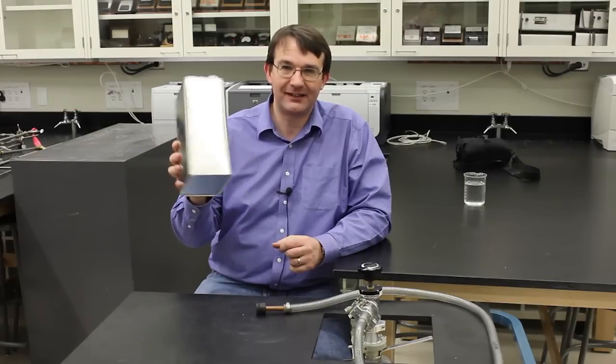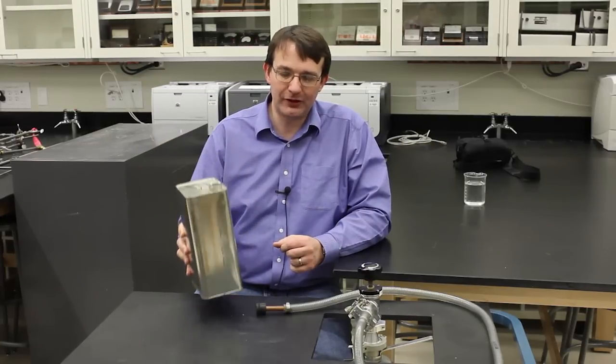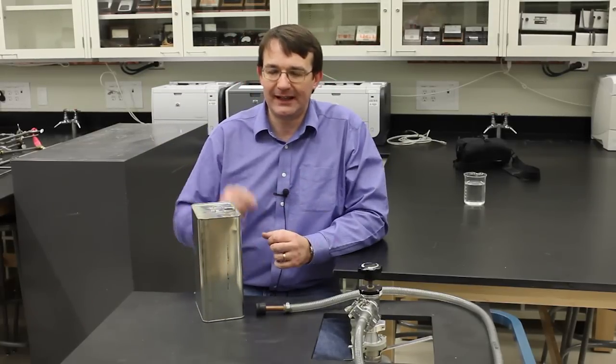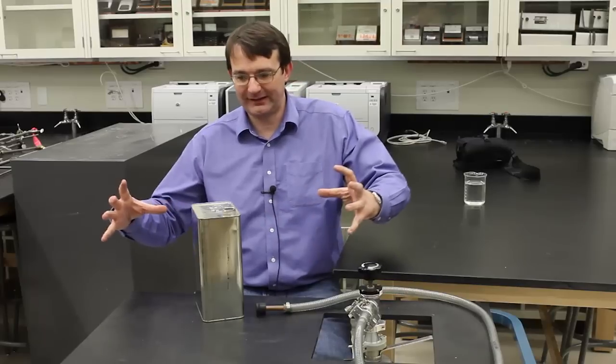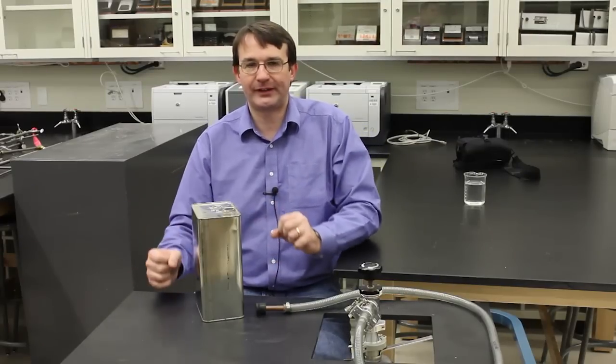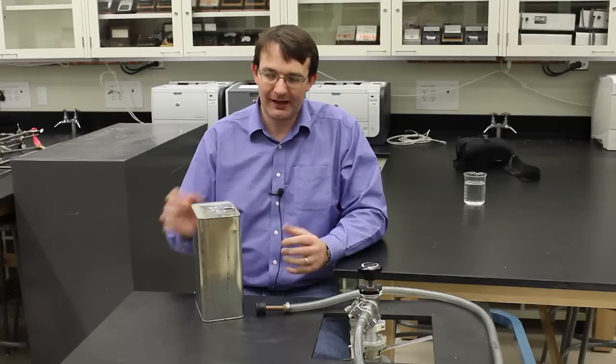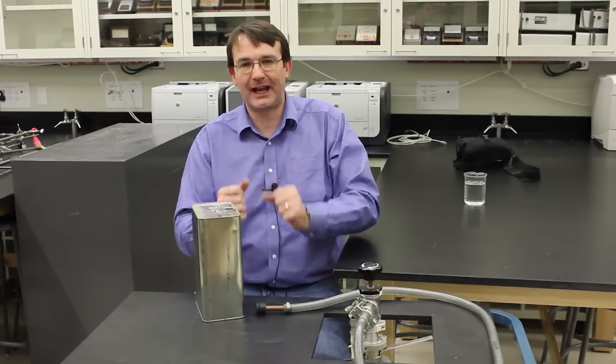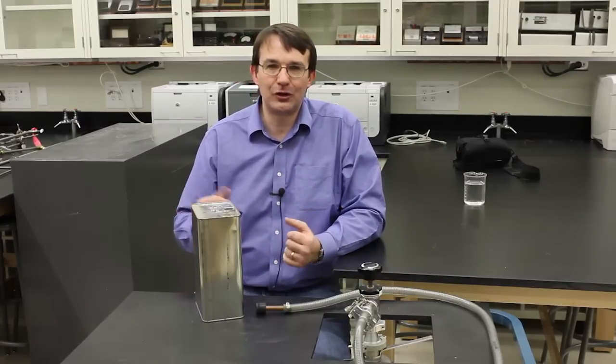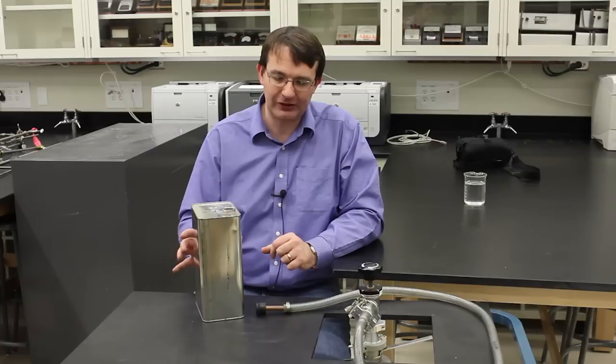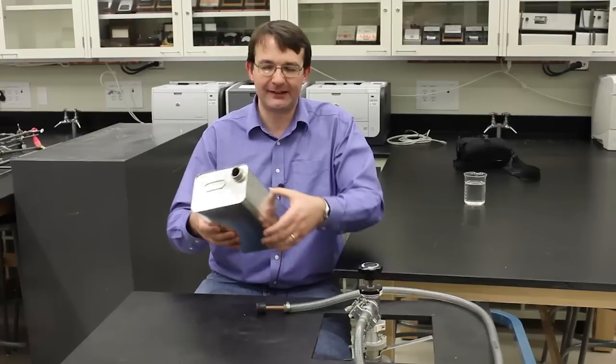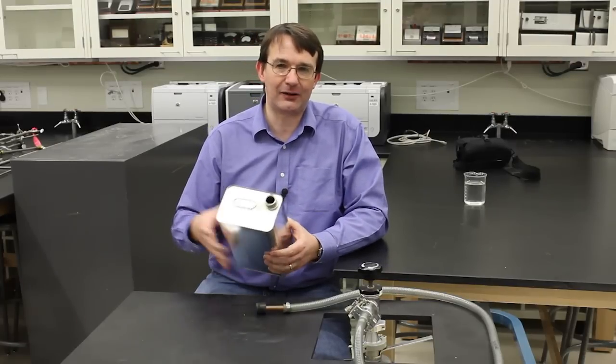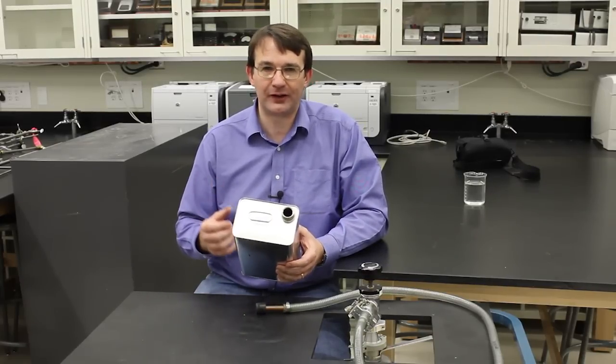When we do that, what will happen is the pressure on the outside atmosphere will act unopposed. At the moment, the pressure inside the can is pushing out just as much as the pressure outside the can is pushing in. And what you will see is the can will collapse in all directions. Now, since it's not a circular can, there will be asymmetries. But what you should see is both sides of the can will collapse in because pressure acts in all directions.